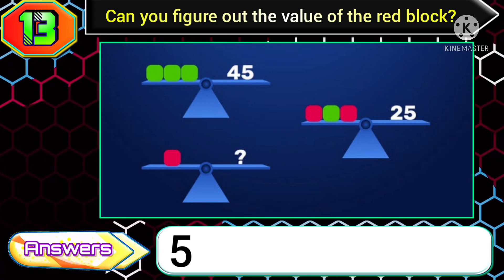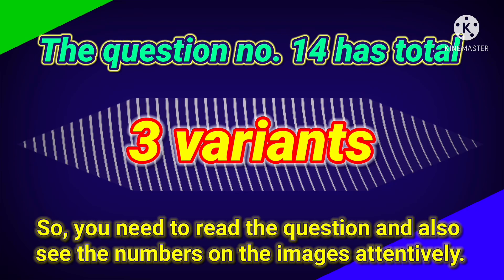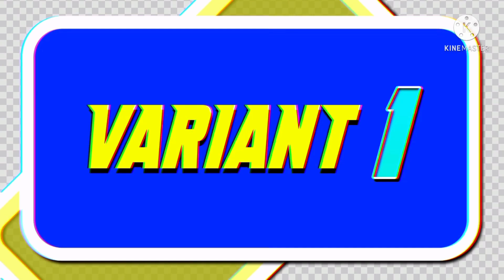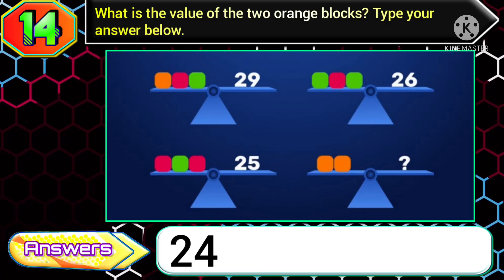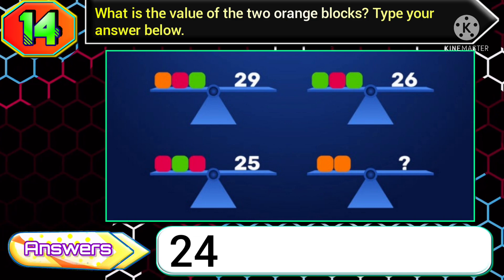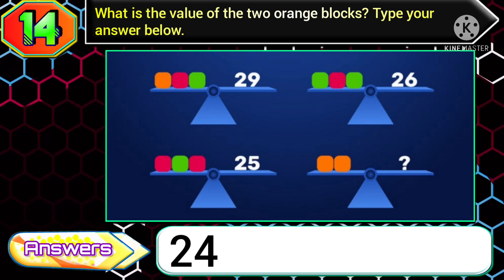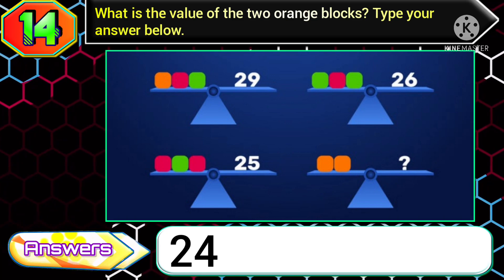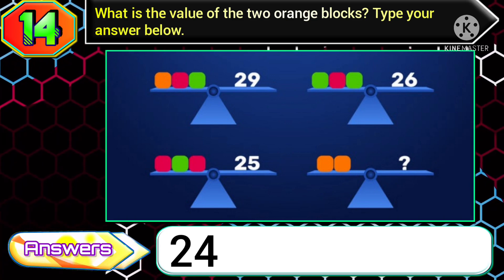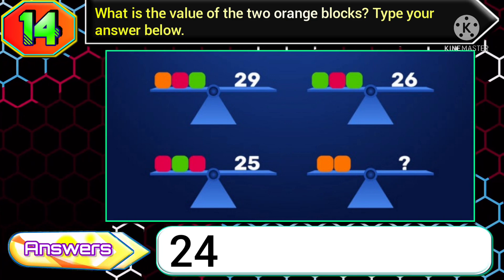Question number 14 has a total of three variants, so you need to read the question and also see the numbers on the images attentively. In variant 1 of this question, if you get the question: what is the value of the two orange blocks, and if you get the numbers as 29, 26, and 25, then you need to type the answer 24.